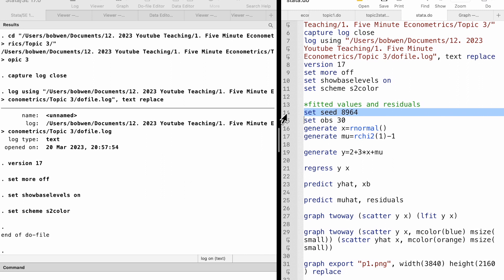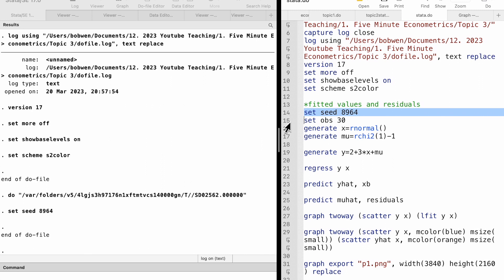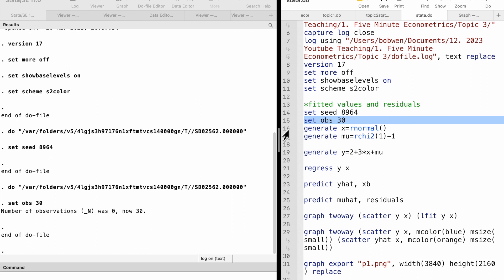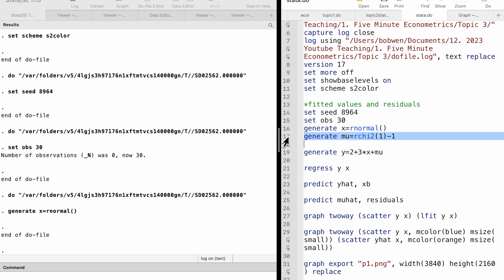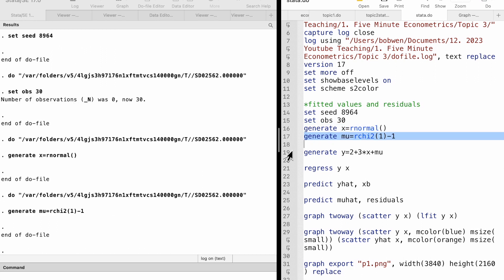Setting the seed guarantees running the commands later will obtain the same random numbers. We use Stata's random number functions to generate the explanatory variable x and the error term mu. Then we generate the outcome variable y,